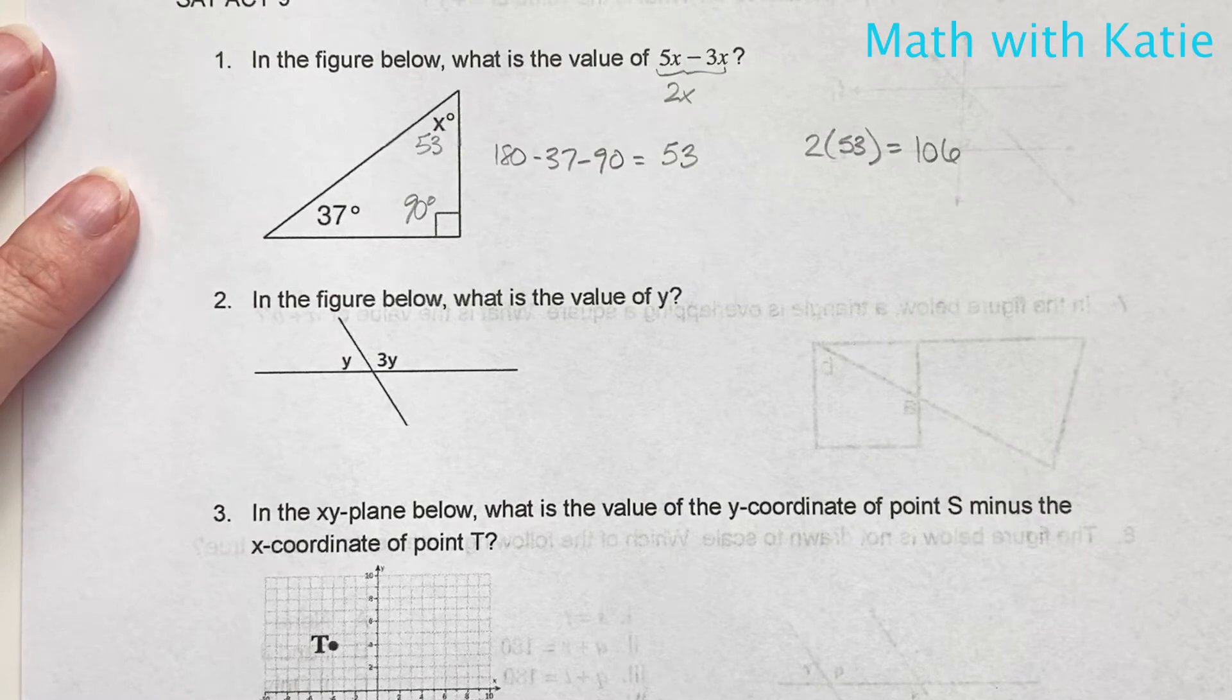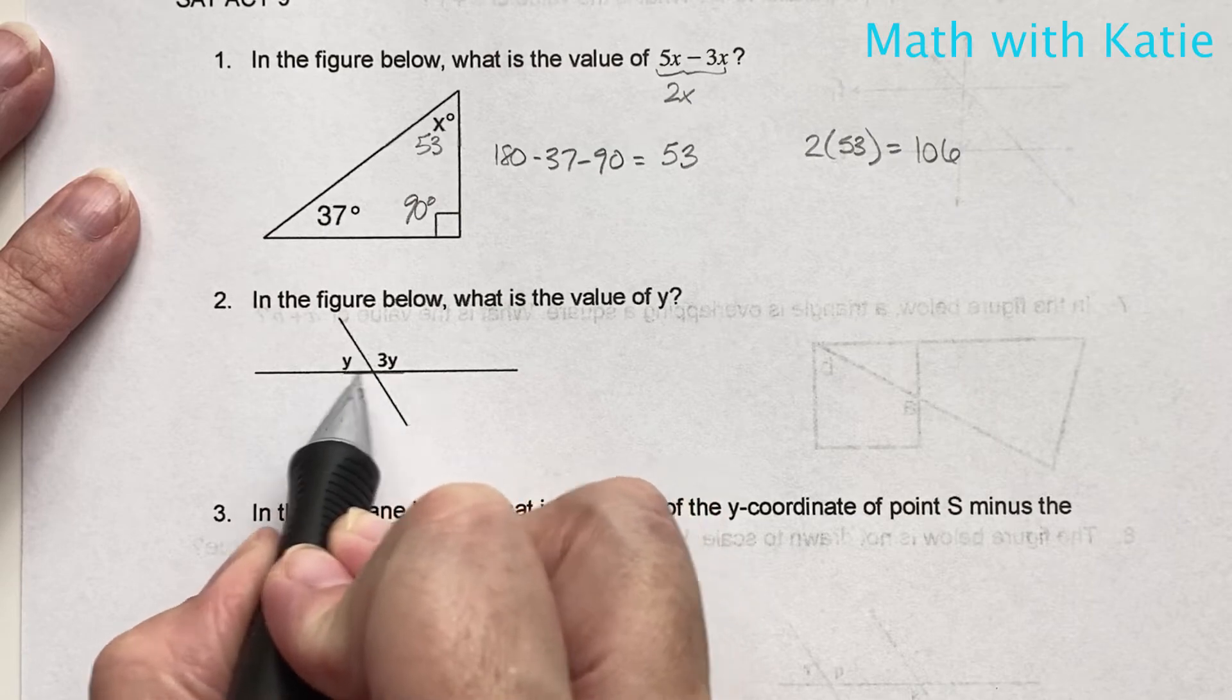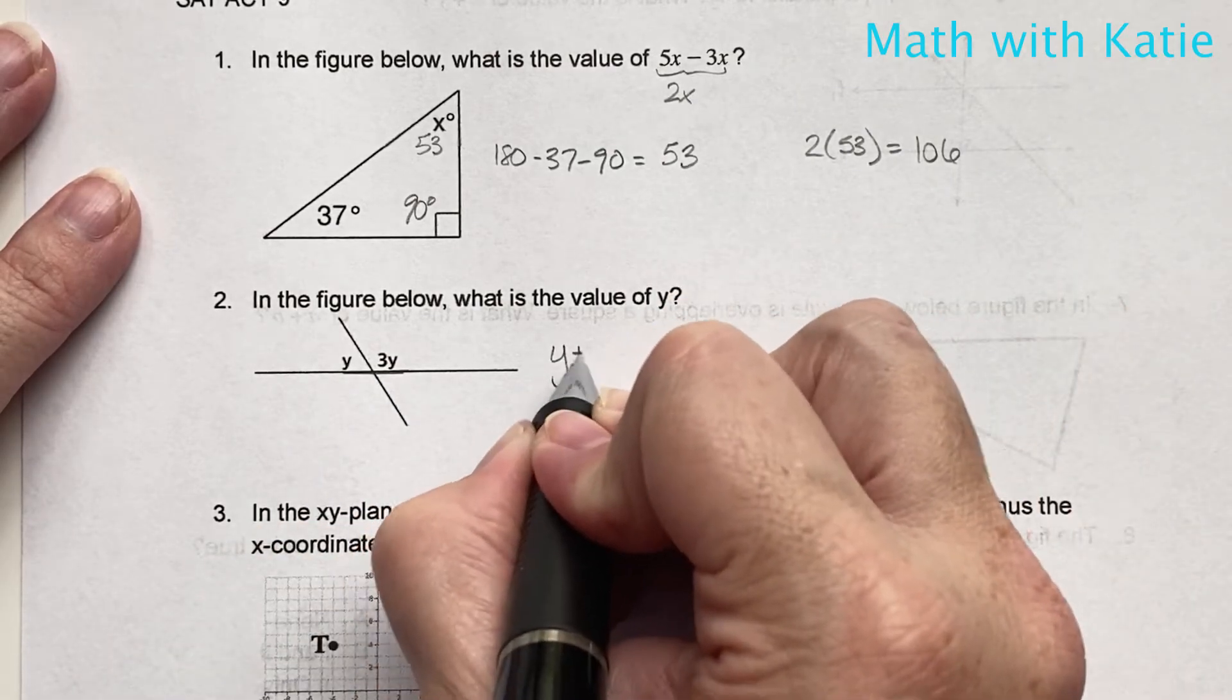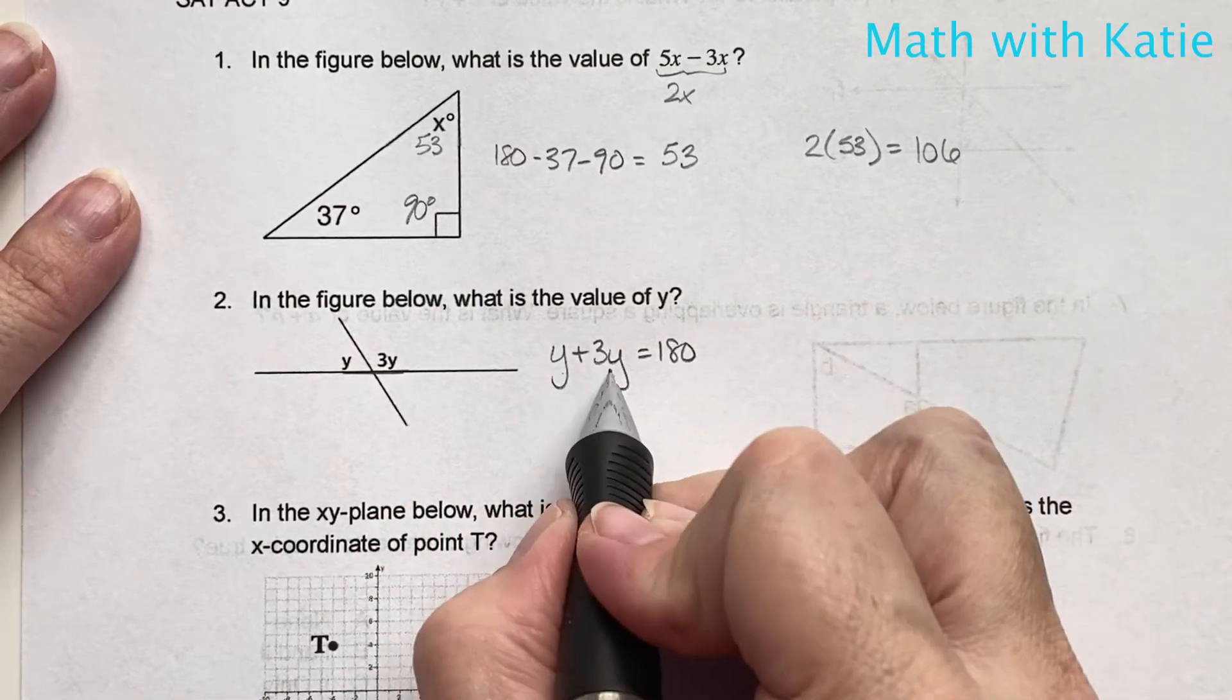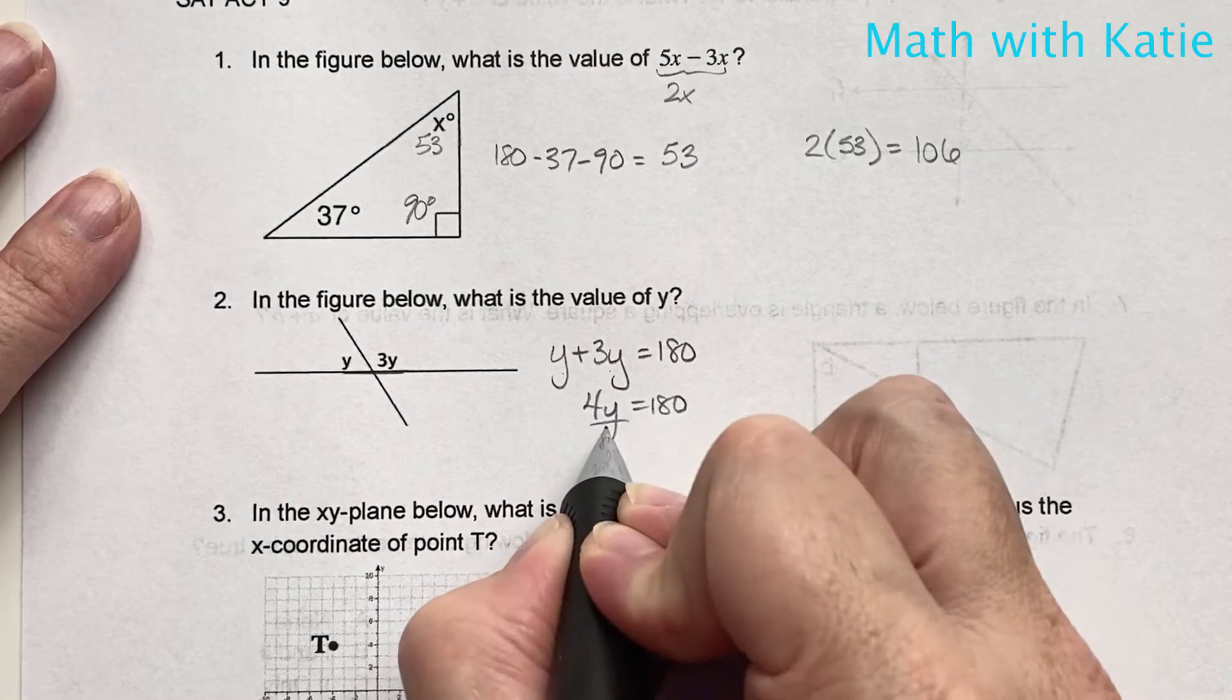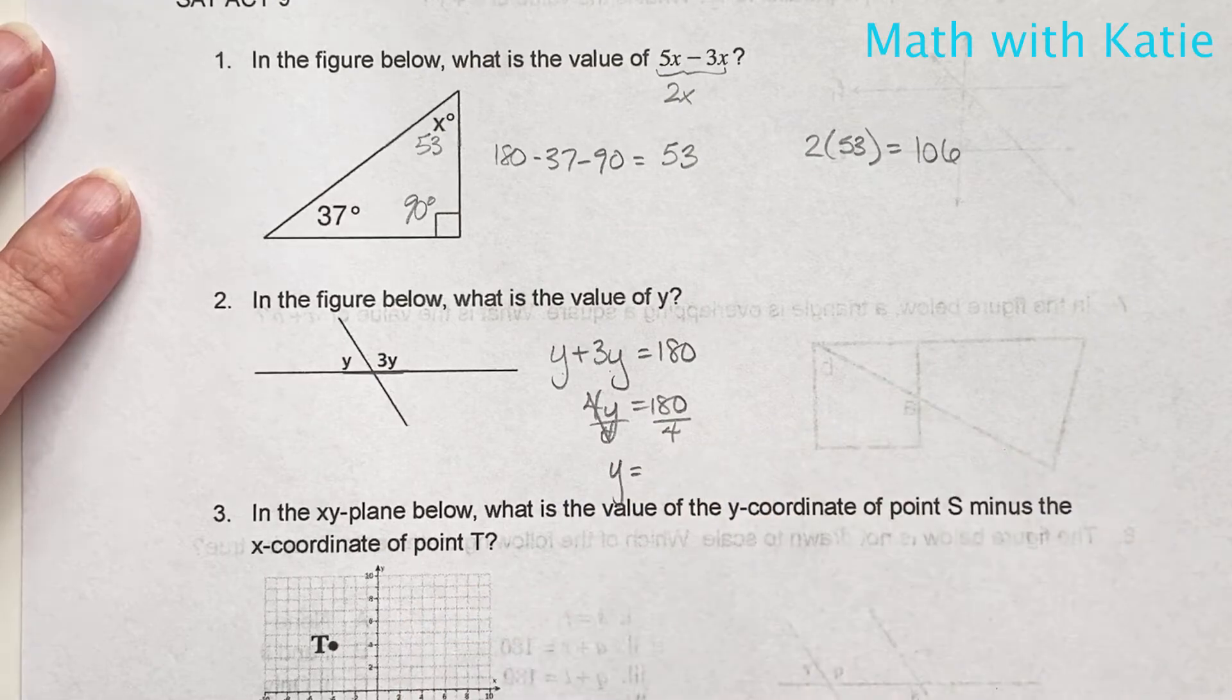In the figure below, what is the value of y? We notice that these are a linear pair, and since we know a linear pair equals 180, we know that y plus 3y equals 180. Add them together, 4y equals 180. Divide by 4. Y equals 45.